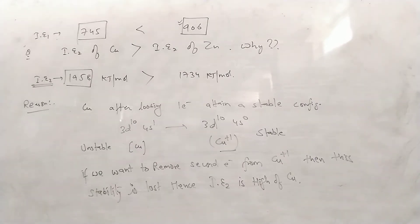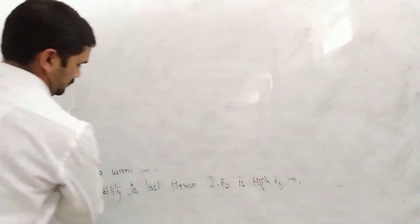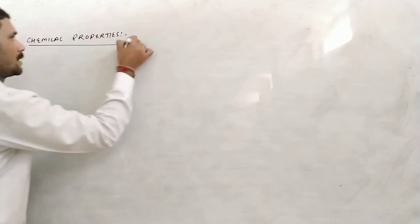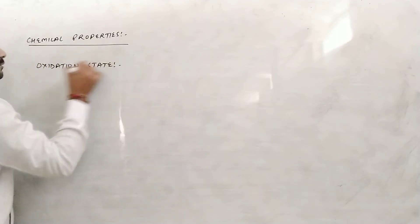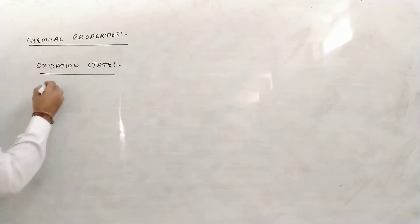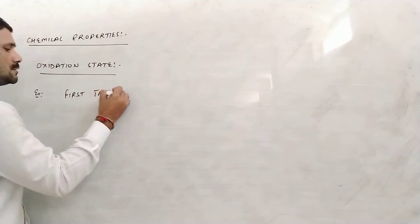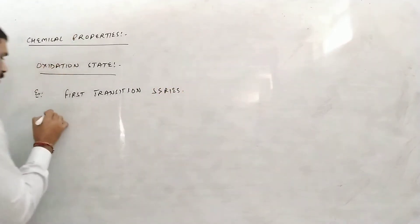Now we move to the next atomic property, that is oxidation state. Oxidation state comes under chemical properties. Let us take the example of the first transition series and look at the oxidation states shown by its elements.